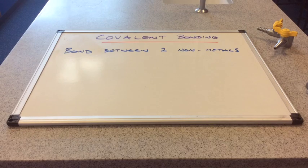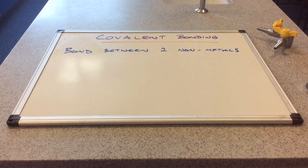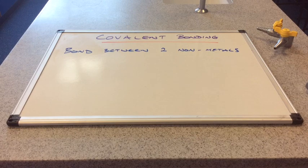In this video I'm going to look at the bond that forms when two non-metals join together, and that is known as covalent bonding. Remember, the bond that's formed between a metal and a non-metal is ionic bonding. So this is going to be different to ionic.